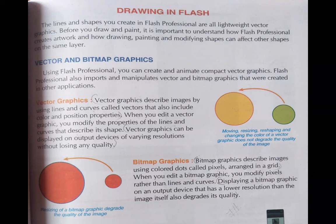Vector graphics describe images using lines and curves. Vector graphics use mathematical equations to represent lines and curves in the form, and they have color and position properties. Remember this point: vector graphics describe images as lines and curves with color and position properties.